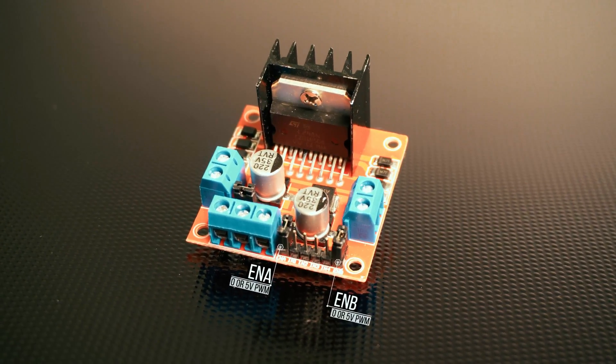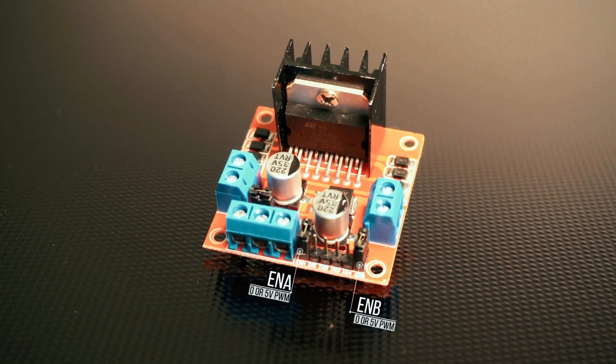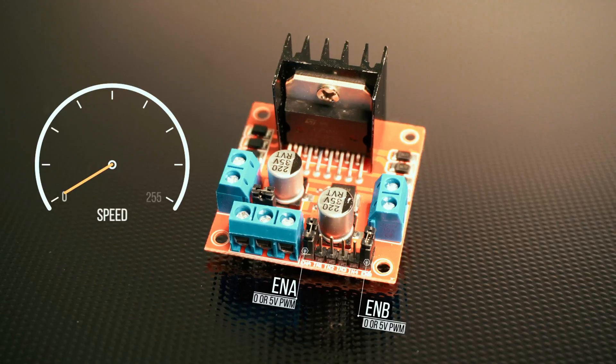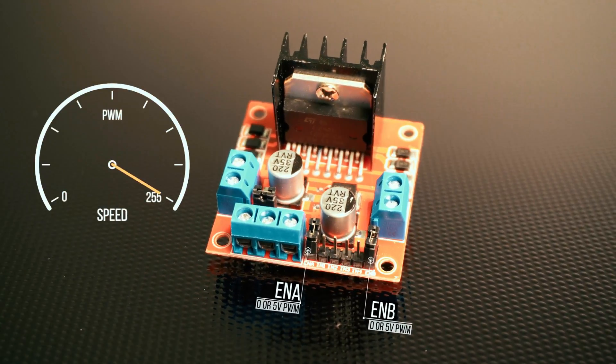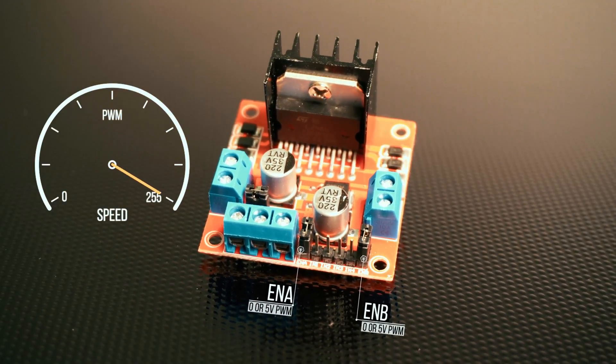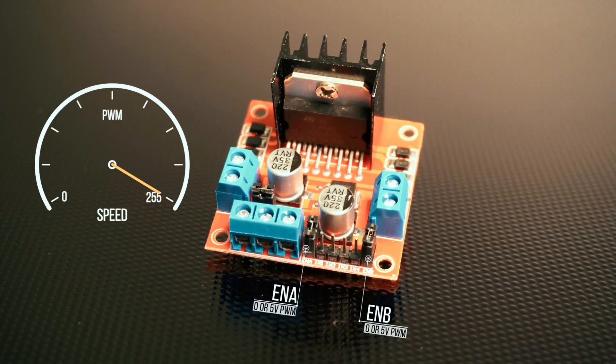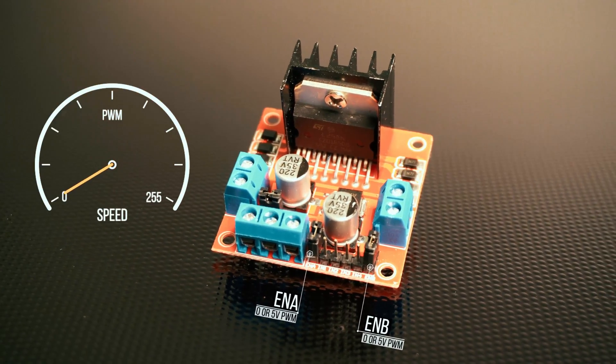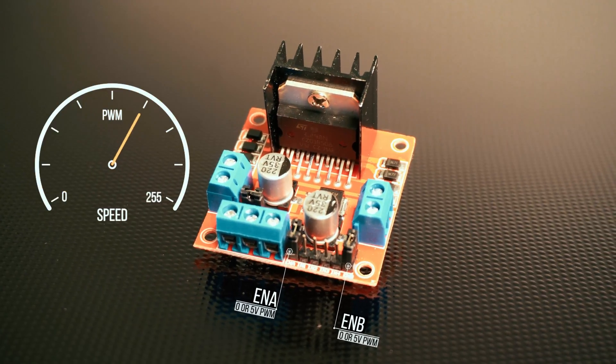How does this module control the motors? The two pins with jumpers on both ends are motor-enabled pins. Leave the jumper on or connect to high voltage level means full throttle. Get the jumper pins removed or connected to low logic level, the motor will be parked. If PWM is feeding to these pins, you get yourself a speed control.